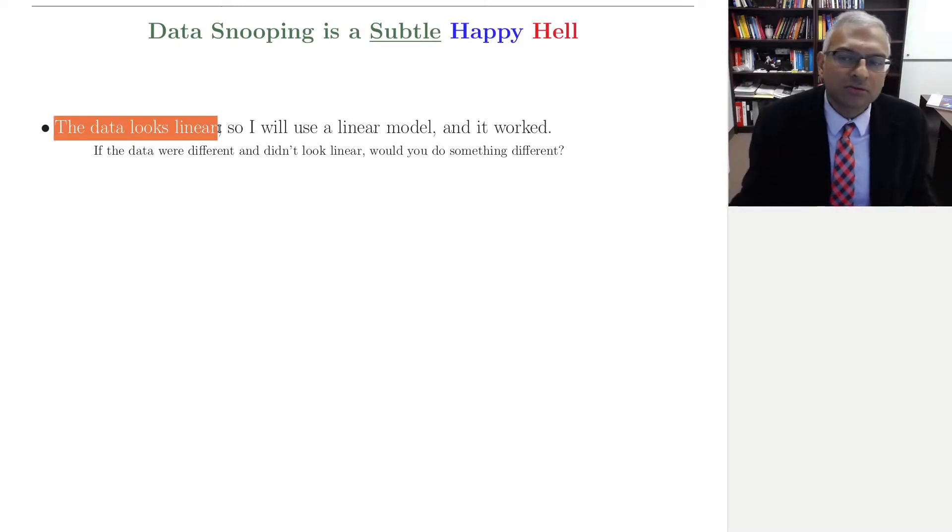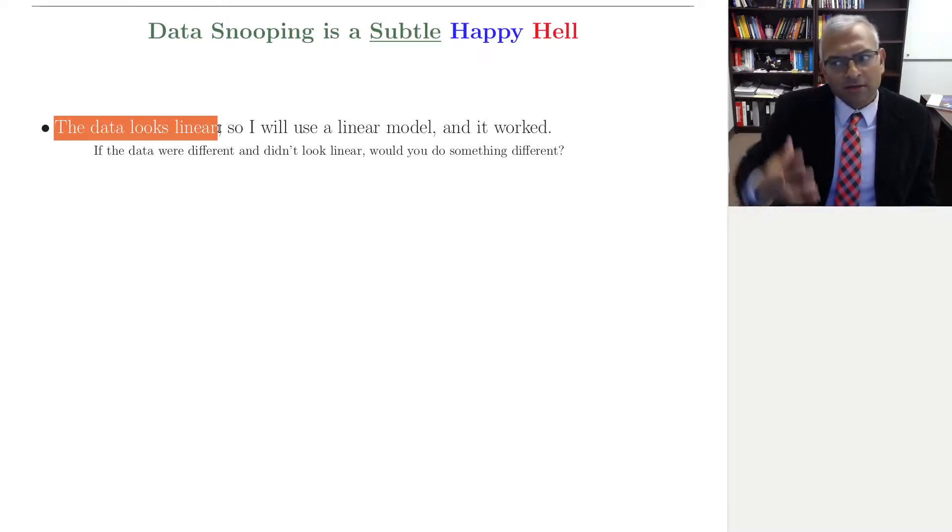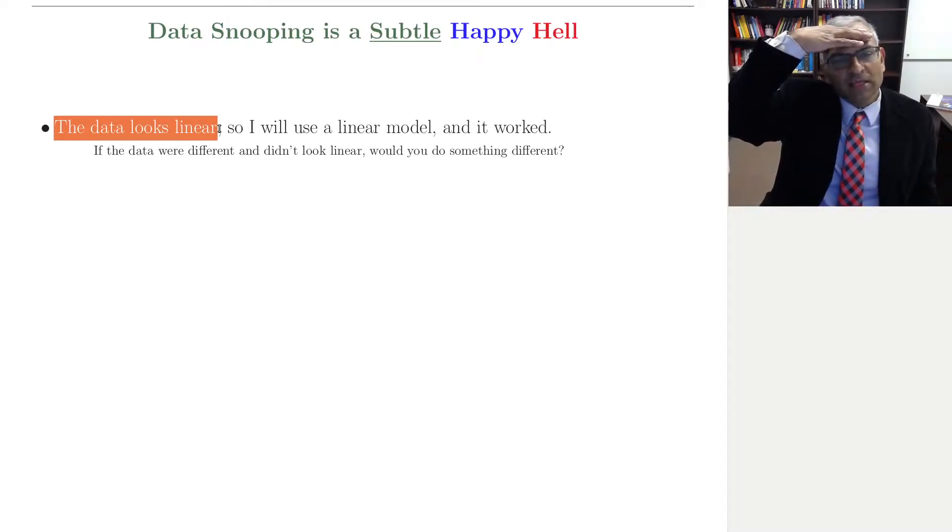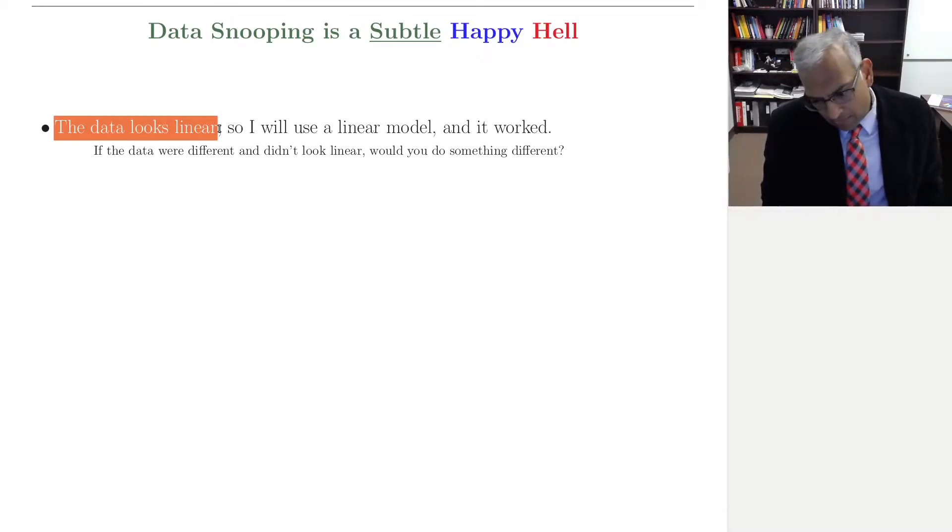Now we know how to deal with, within the linear model, you picked a specific hypothesis. That's the VC dimension. But we have no idea the extent of choice you made in order to choose the linear model by looking at the data.